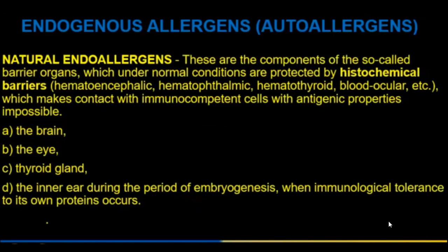Endogenous allergens or auto-allergens: natural endoallergens are components of so-called barrier organs which, under normal conditions, are protected by histochemical barriers — hematoencephalic, hematoophthalmic, hematothyroid, blood barriers — making contact with immunocompetent cells impossible. These include the brain, eyes, thyroid glands, and inner ear, which during embryogenesis develop immunological tolerance to their own proteins.